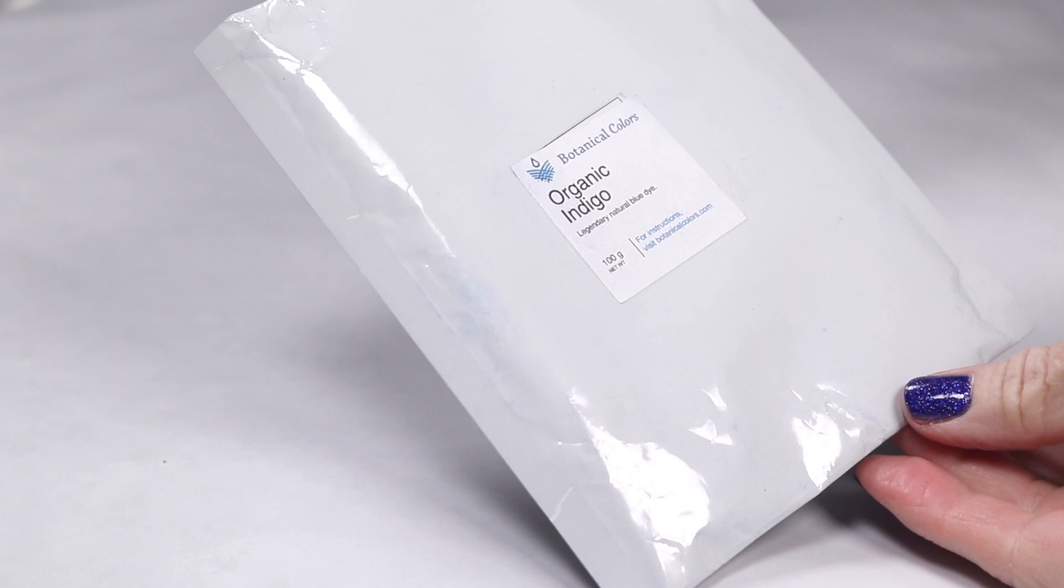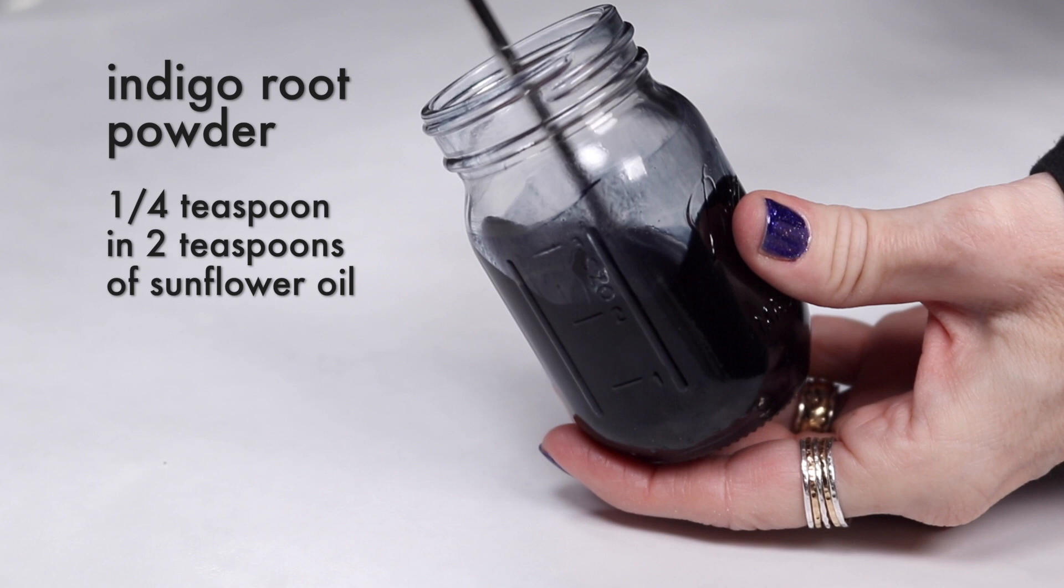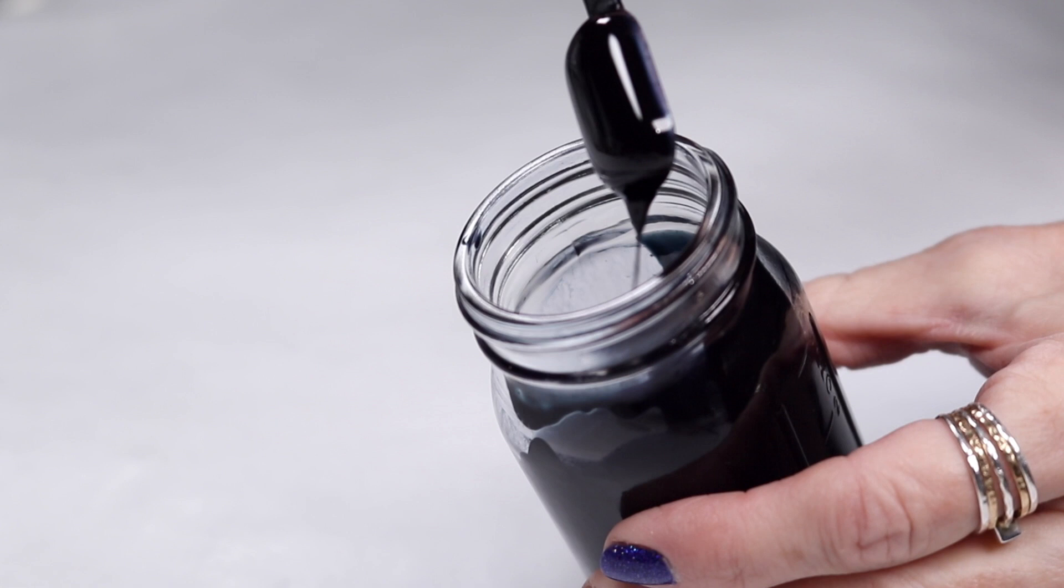For my blue colorant, I mixed one quarter teaspoon indigo powder with two teaspoons of sunflower oil. This indigo is very pigmented, so it doesn't take much at all to create a blue color in soap.